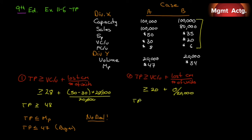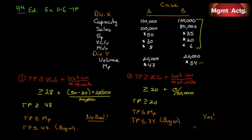For the buyer, the transfer price must be less than or equal to the market price they're already paying: $34. So the transfer price must be greater than or equal to $20 and less than or equal to $34. Will a deal take place? Absolutely yes — there's a $14 range where any price above $20 and below $34 is in both divisions' best interest.